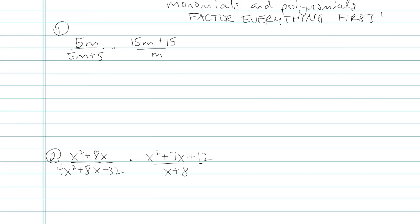Let's look at this first one. What I want to do is factor everything. So my first fraction, the top can't factor, but the bottom fraction has a greatest common factor of 5. Second fraction, greatest common factor there of 15, and the bottom m. I can't do anything with that. Everything is now factored.